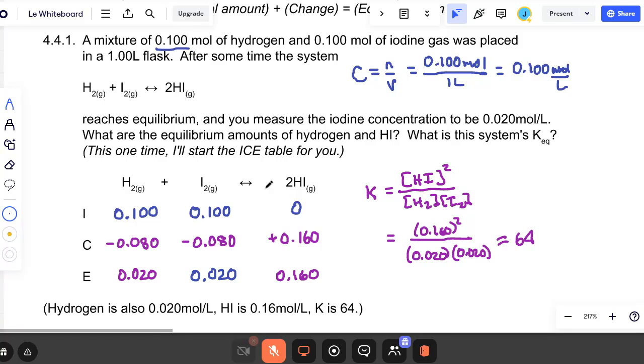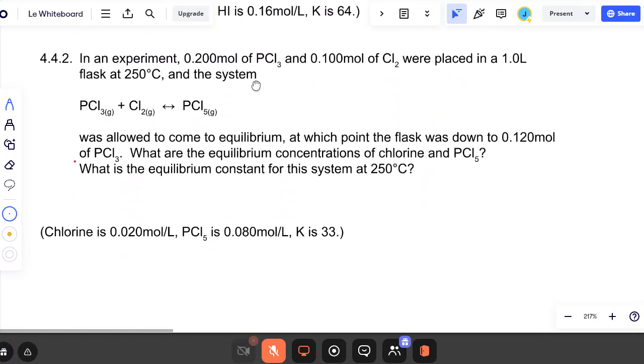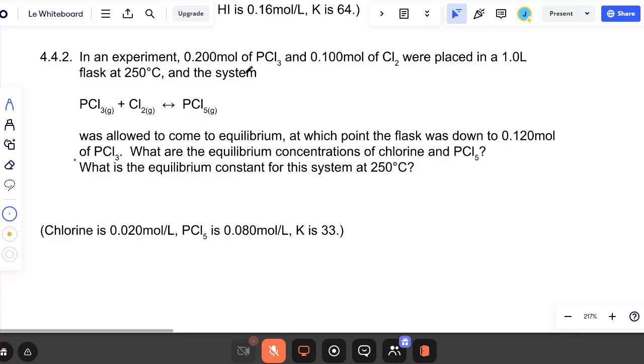Let's try another one. In an experiment, PCl3 and Cl2 were placed in a 1 liter flask at 250, and the system does this. Okay, so this time they didn't set up the table for us. We get to do it. So write your reaction nice and big so you have room to put information under it. PCl3. This is a very popular reaction for equilibrium questions. Probably has been for centuries.